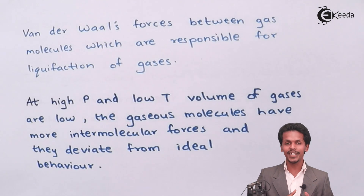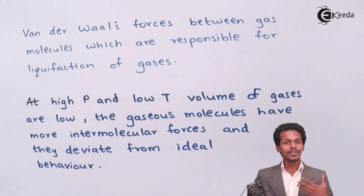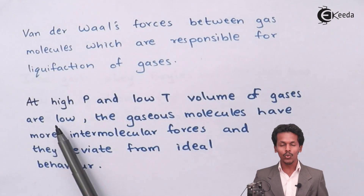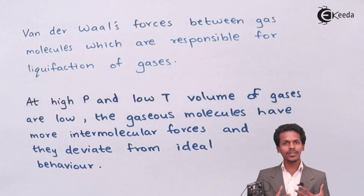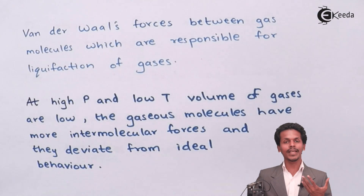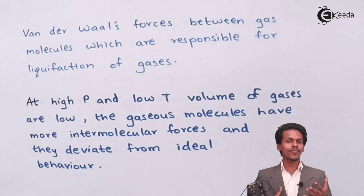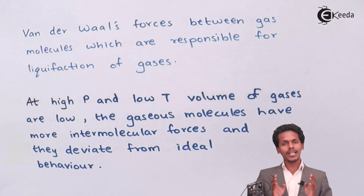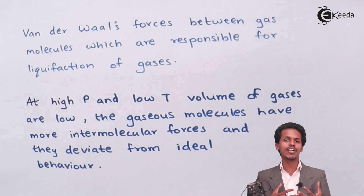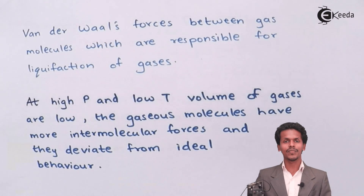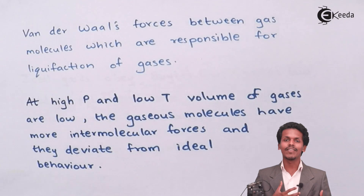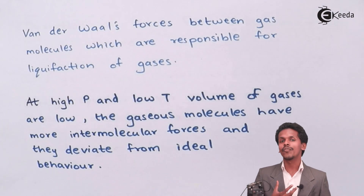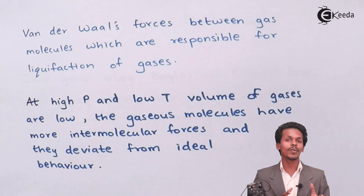At high pressure and low temperature, the volume of real gases decreases. Suppose I take a real gas and apply more pressure while also reducing the temperature — the excess pressure causes gas molecules to come closer together, developing intermolecular forces of attraction. This increases the possibility of liquefaction, causing the volume to reduce as the gas molecules come close to each other and occupy less space.